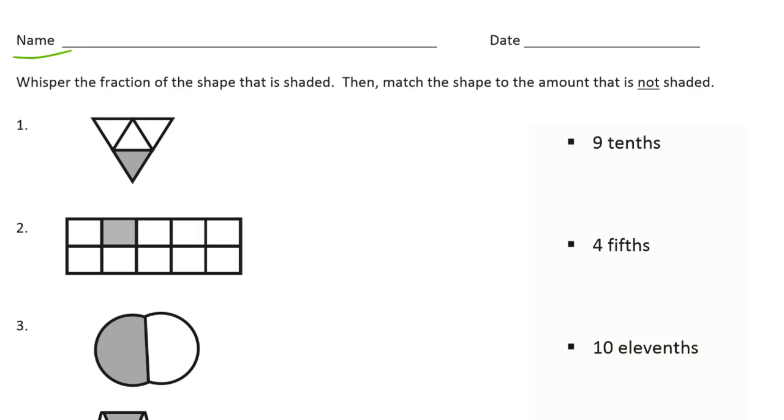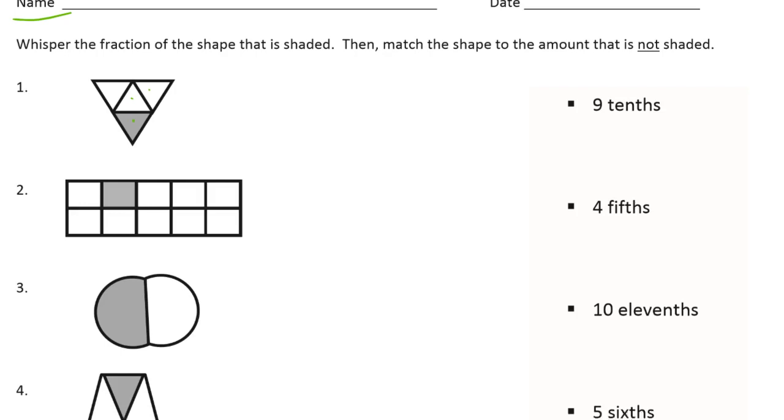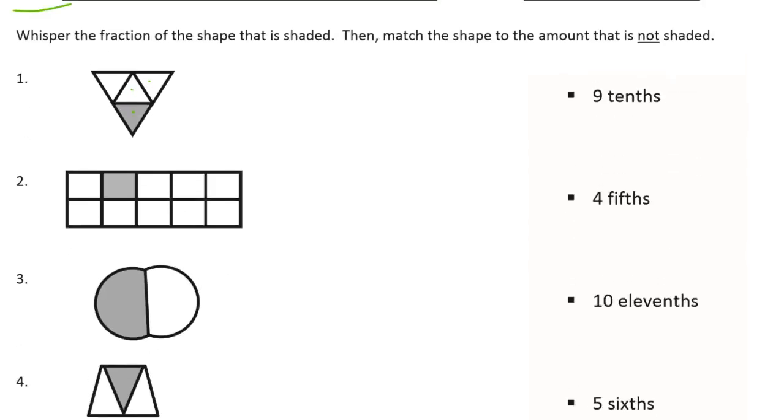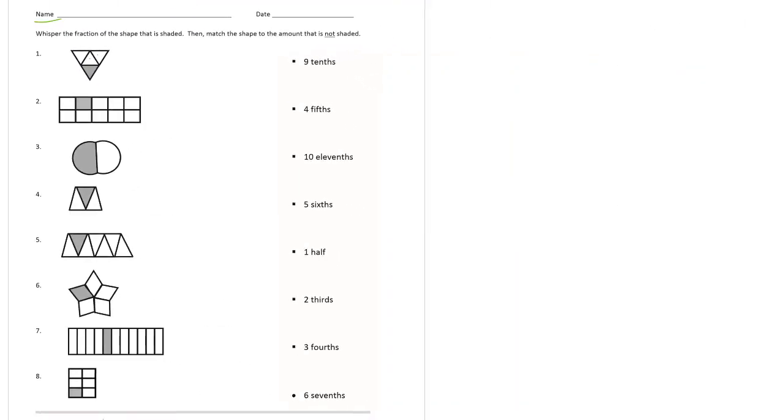This right here is 1, 2, 3, 4, so there's fourths. There's 1 fourth shaded in, and I have to match that up with 3 fourths that are not shaded in. That's way down here. I'm going to have to zoom out for this. This guy matches all the way down here with 3 fourths not shaded in.